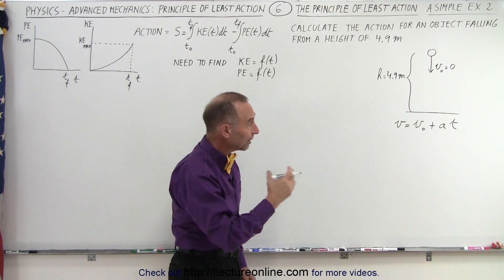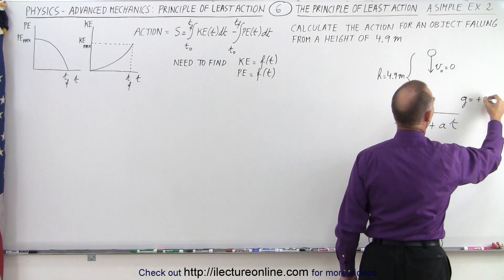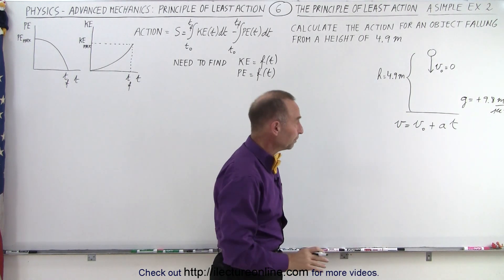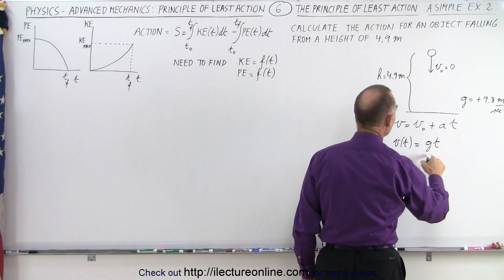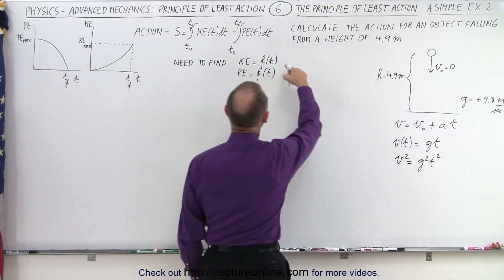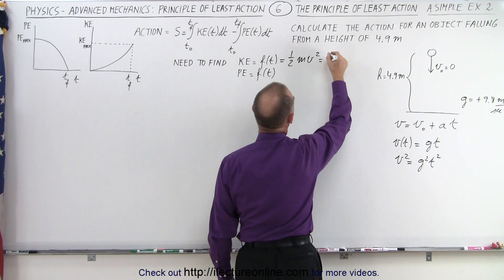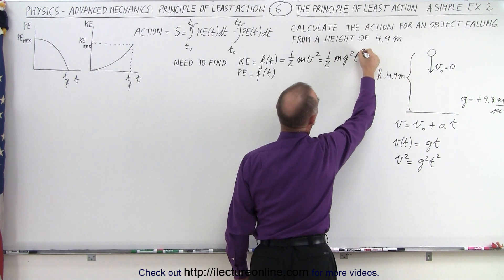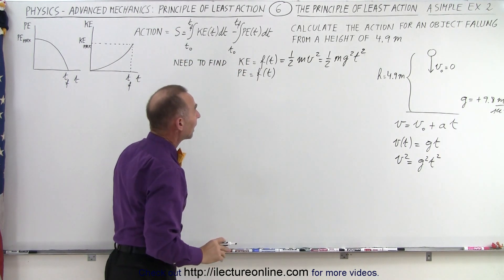Our initial velocity will be zero and the acceleration will be the acceleration due to gravity. We let g be positive 9.8 meters per second squared to make the calculations easier. So velocity as a function of time is g times t, and therefore when we square the velocity we get g squared t squared, which is what we need for the kinetic energy. The kinetic energy equals one half m v squared, which becomes one half m g squared t squared. That is what we need inside the integration to find the average kinetic energy.